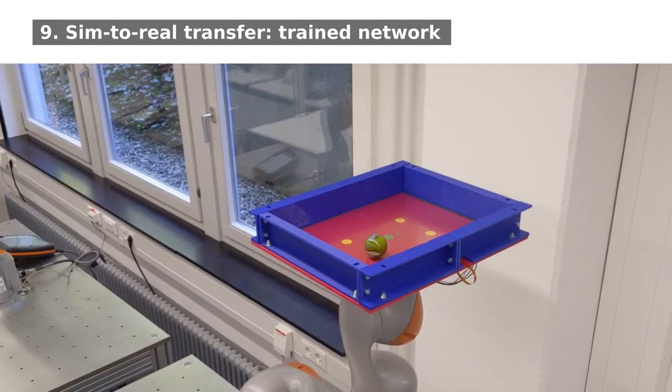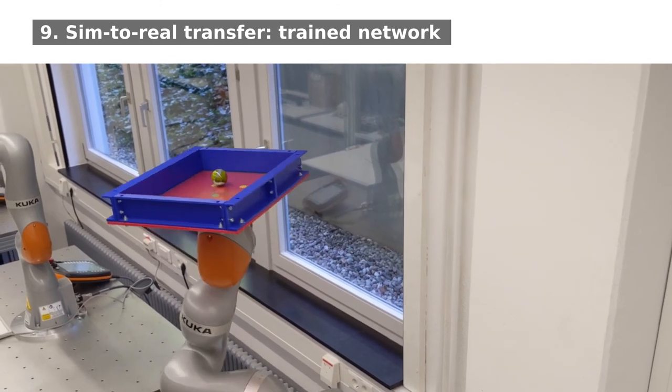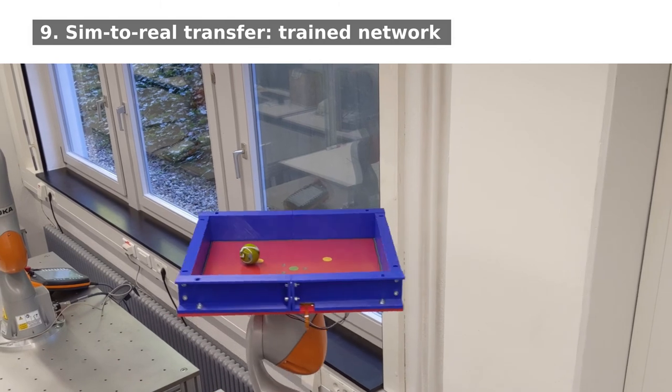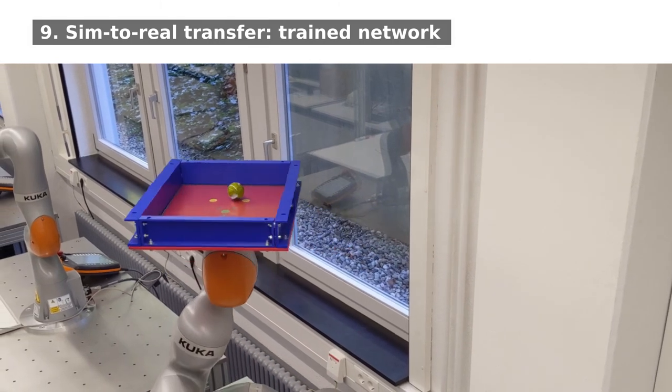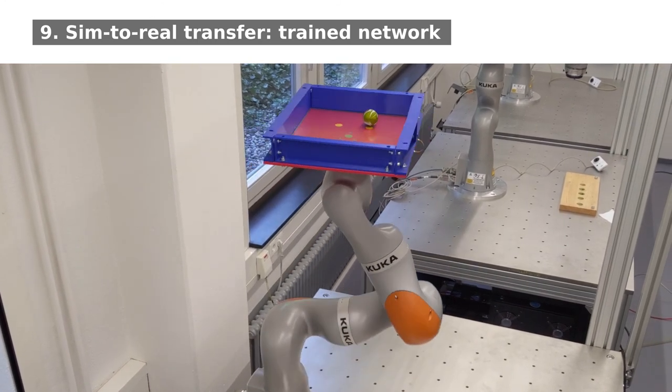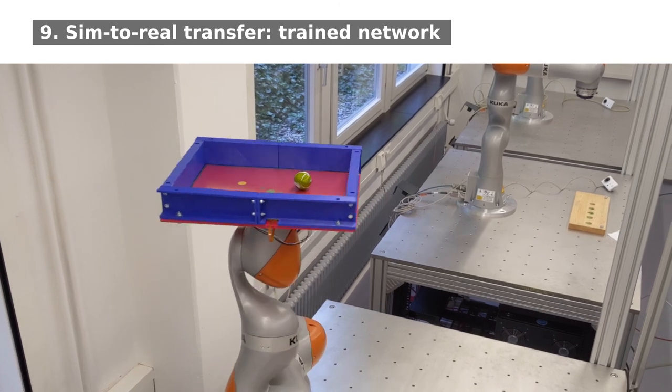In contrast, a trained agent manages to keep the ball close to its initial place. The videos show that the network can handle different reference trajectories and initial ball positions.